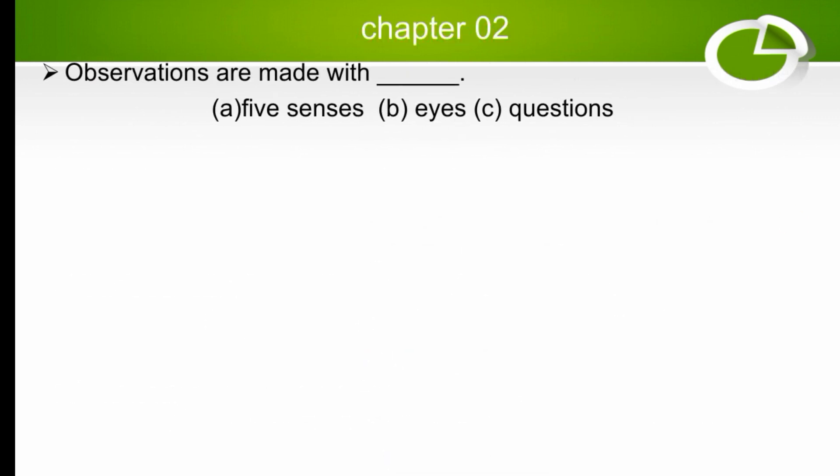Observations are made with which? The options are 5 senses, eyes, or questions. Observations are always made with the 5 senses, so the right option is 5 senses.